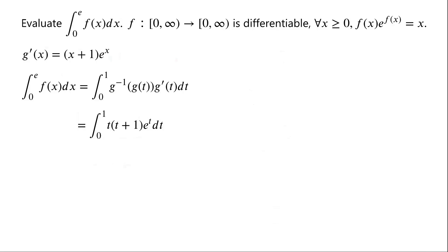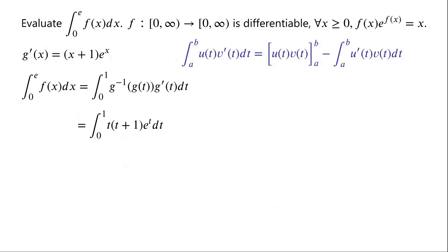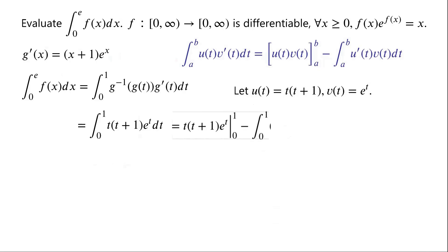We will evaluate this integral using integration by parts. Recall that the integral from a to b of u(t)·v'(t) dt equals u(t)·v(t) evaluated from a to b, minus the integral from a to b of u'(t)·v(t) dt. Let u(t) equal t(t+1) and v(t) equal e to the power of t. Then u'(t) equals 2t+1 and v'(t) equals e to the power of t. Applying integration by parts, the integral equals t(t+1)·e^t evaluated from 0 to 1, minus the integral from 0 to 1 of (2t+1)·e^t dt.